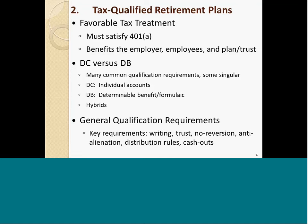Defined benefit plans, which are old school and there aren't as many of them as there used to be, are a different genre. Under a defined benefit plan, a participant is entitled to receive a predetermined amount at regular intervals upon retirement according to a formula, usually payable in the form of monthly checks for the remaining life of the participant or extended over the life of the participant and his or her partner or spouse. The actual benefit level is determined by a formula of key factors, usually the number of years of service and the compensation for given years of service.